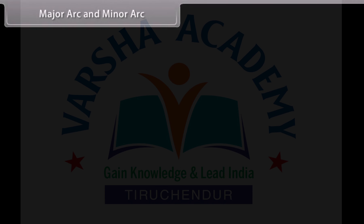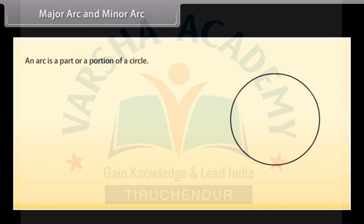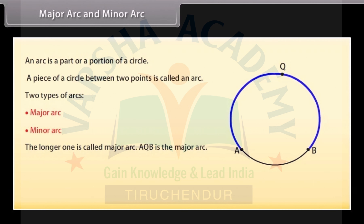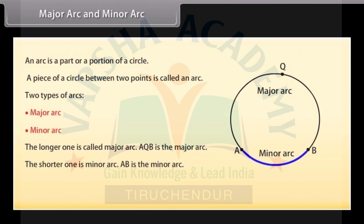Major arc and minor arc. Look at this figure — this is an arc. An arc is a part or a portion of a circle; or we can say that a piece of a circle between two points is called an arc. There are two types of arcs: the major arc and the minor arc. The longer one is called the major arc — here AQB is the major arc. The shorter one is the minor arc — APB is the minor arc. The arc is denoted by this sign.